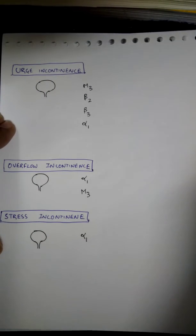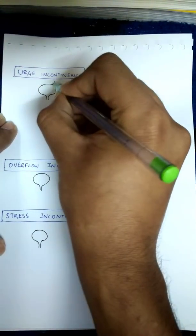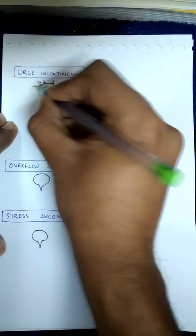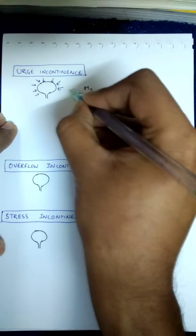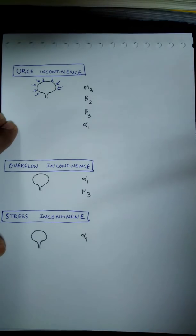This is due to increased contraction of the bladder muscles even before the bladder is completely filled. Due to the contraction, the person urinates small amounts of urine more times a day.